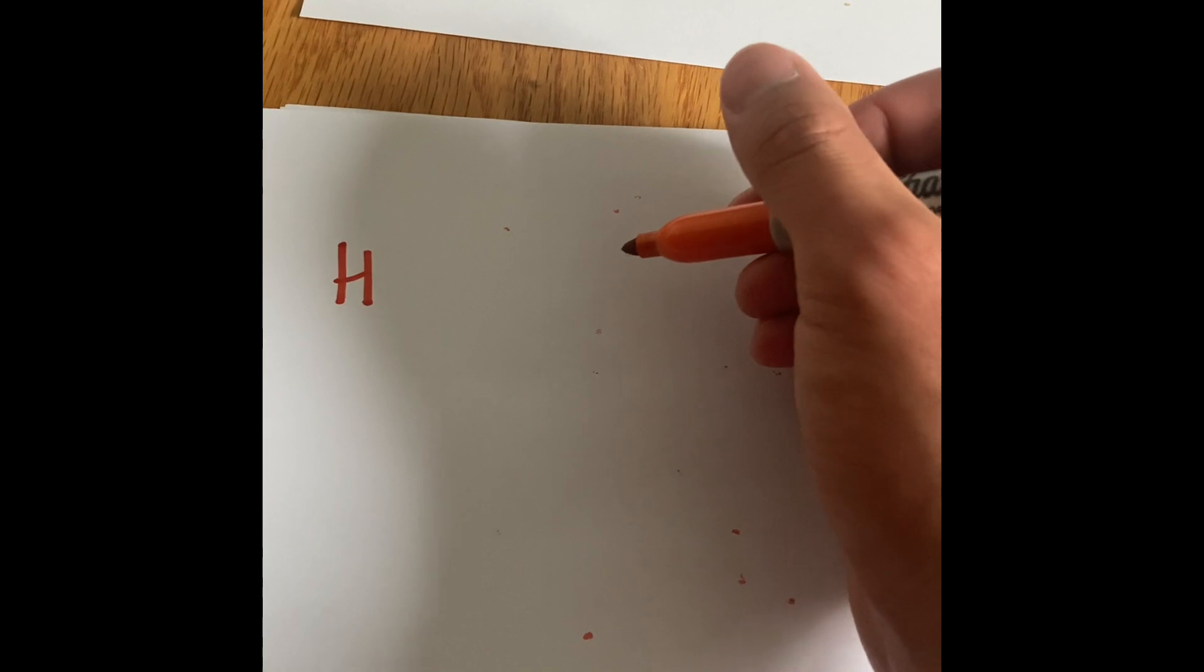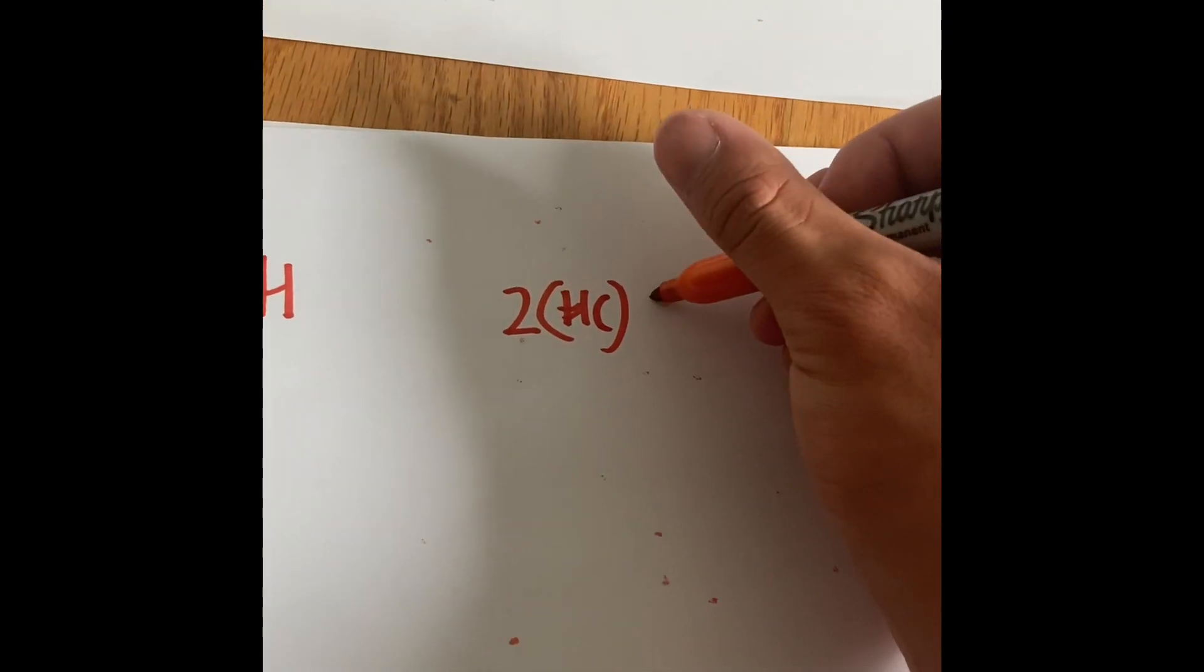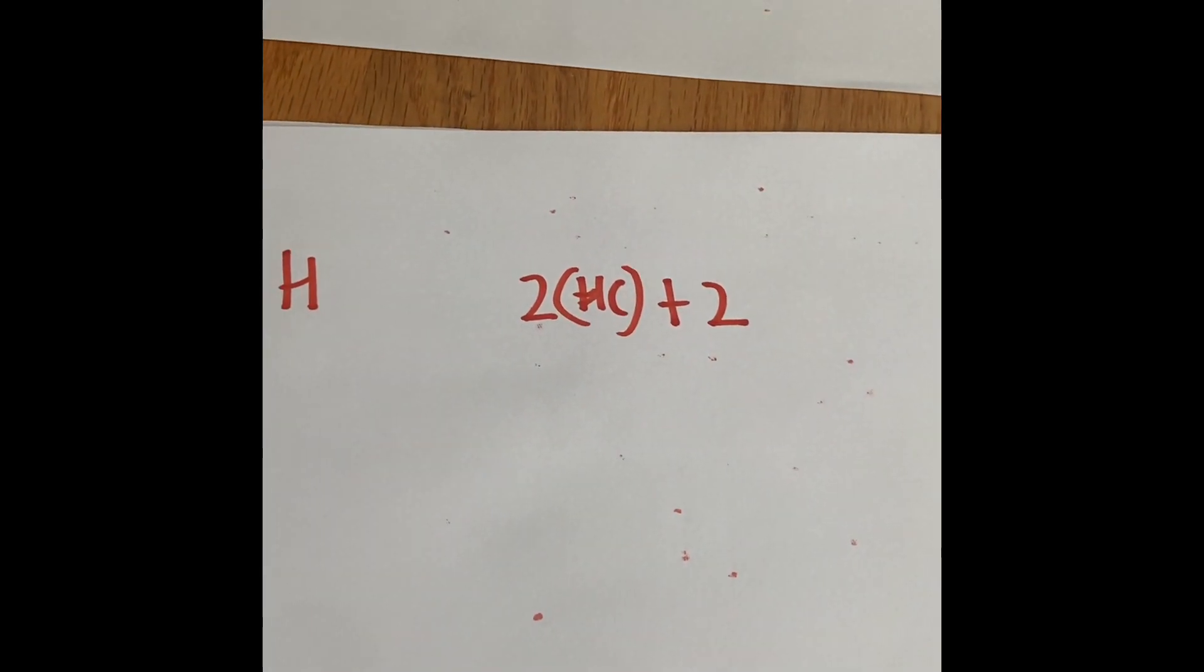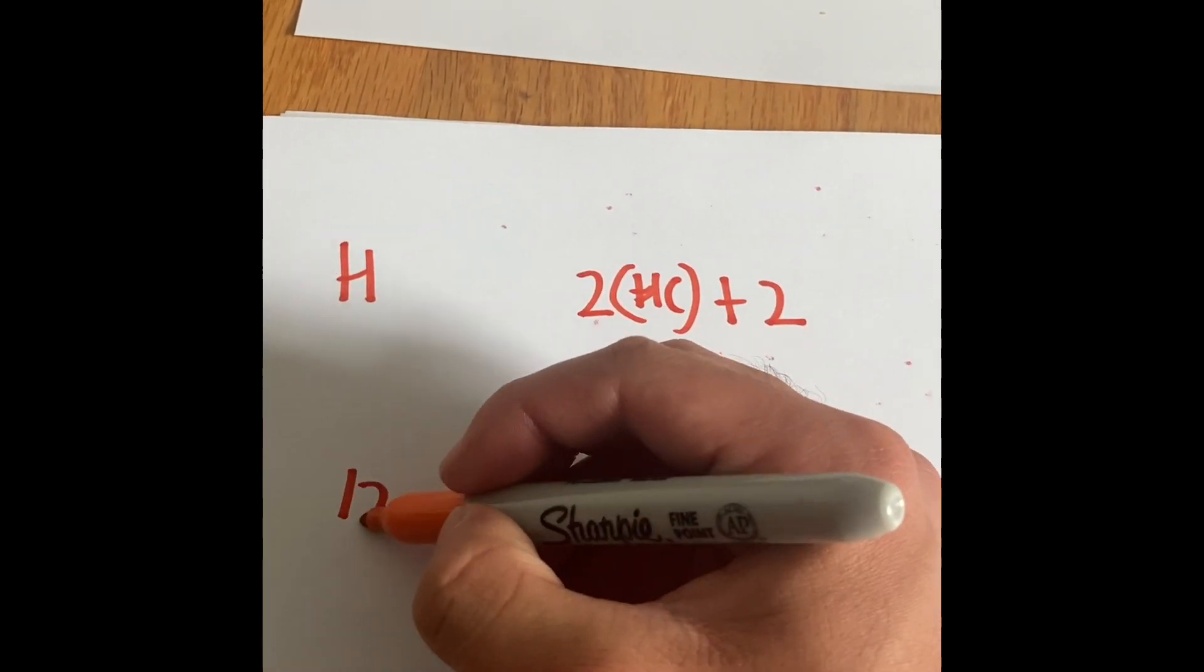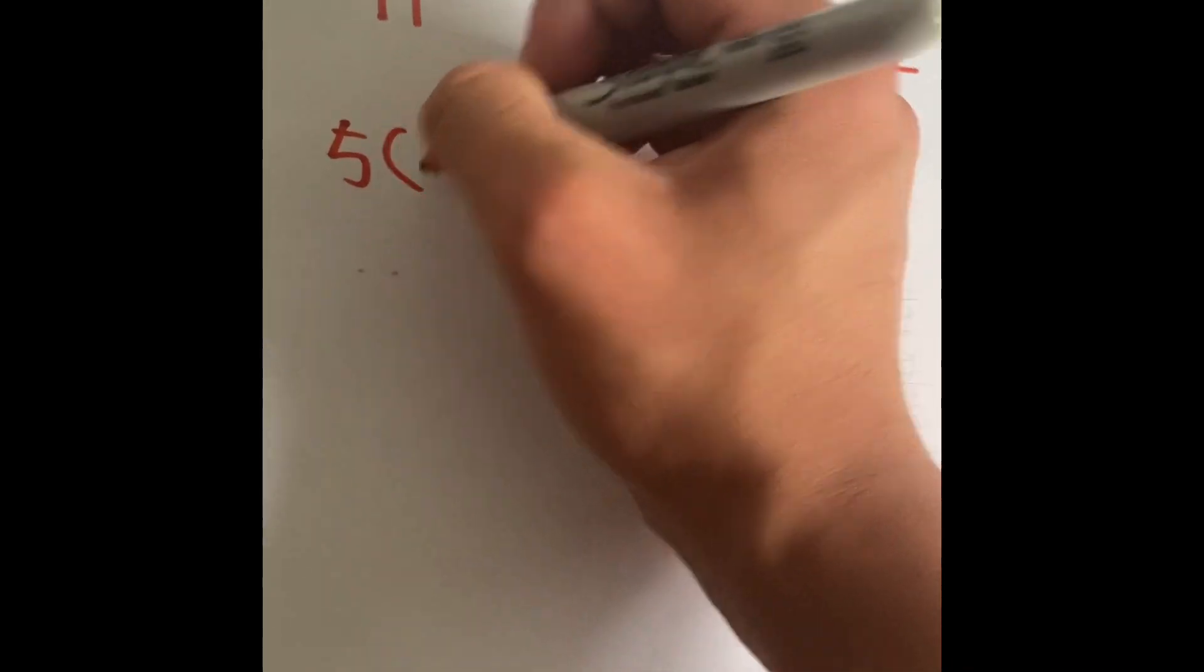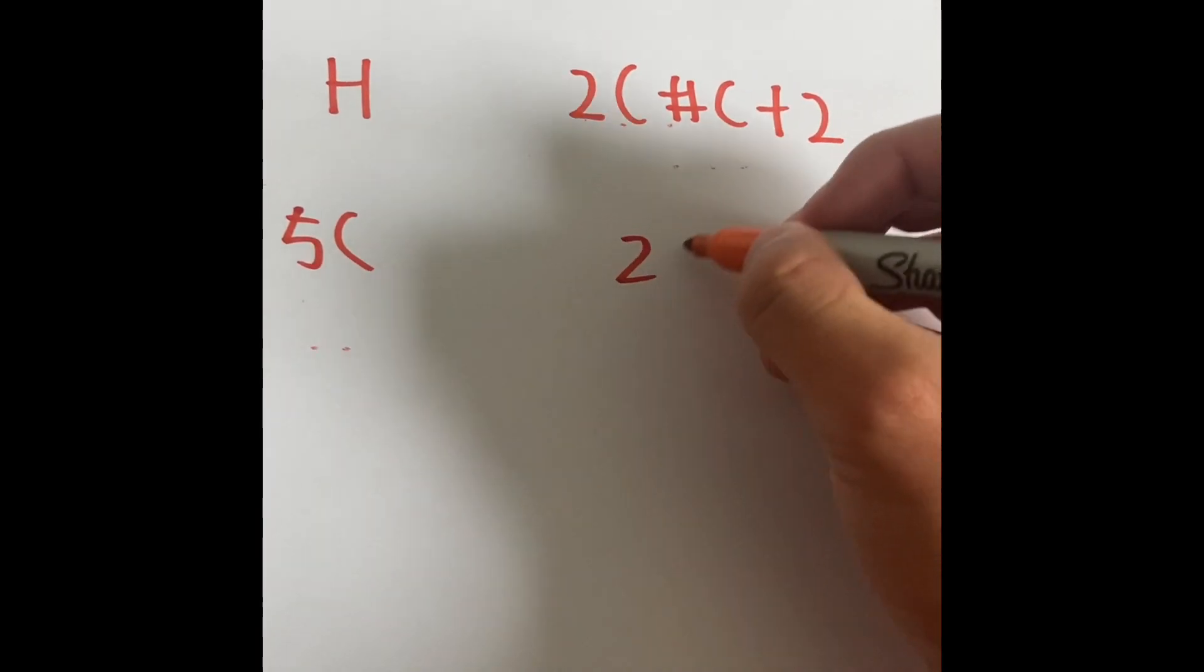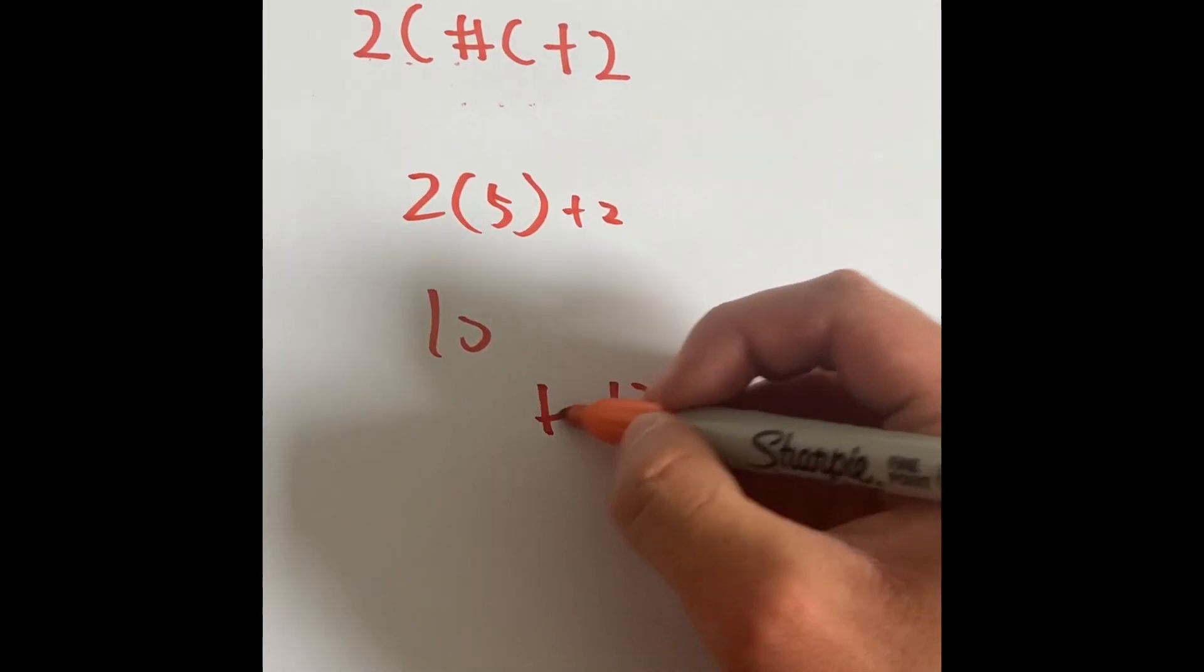There's a special formula that we can use to understand how many carbons and how many hydrogens that we have. The formula is, to find the number of hydrogens, we would have to do two times the number of carbons, then we have to add that by two. Here's an example. If we have five carbons, how many hydrogens are there? Well, two times five is ten, plus two is twelve. Twelve hydrogens.